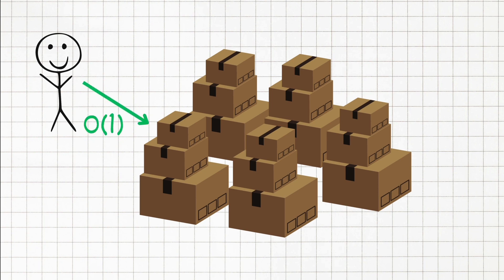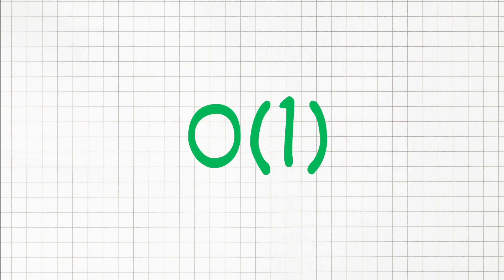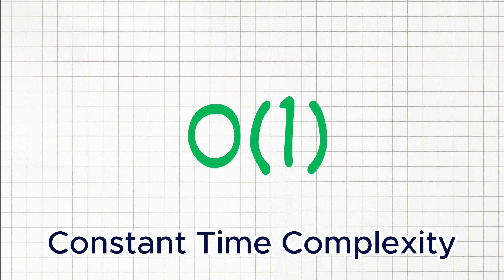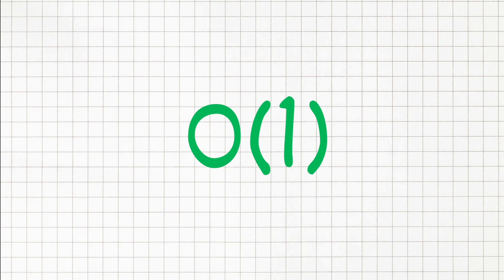Now think about how long it would take you to find that item, if it were in the first box you checked, versus if it were in the last box. That's essentially what we are dealing with here, best case versus worst case scenarios. First up we have O of 1, also known as constant time complexity. This is ideal scenario,